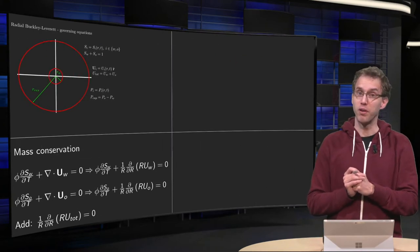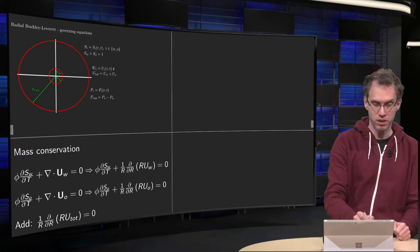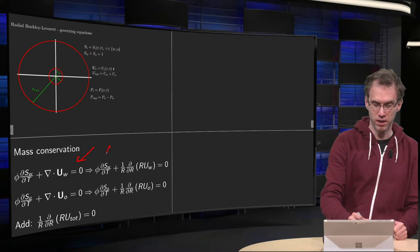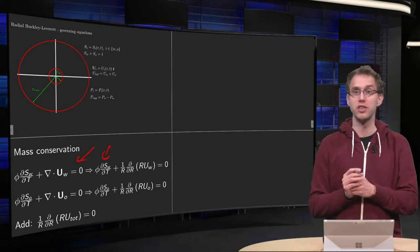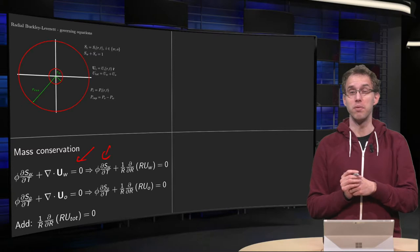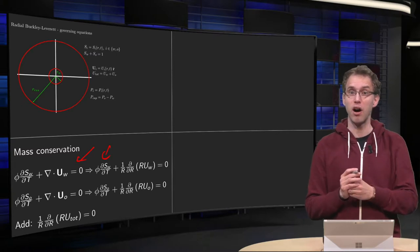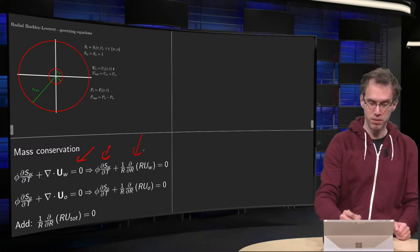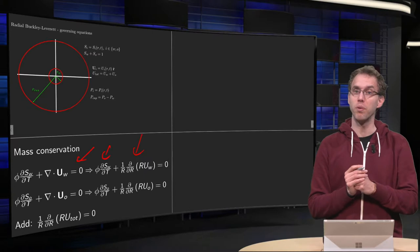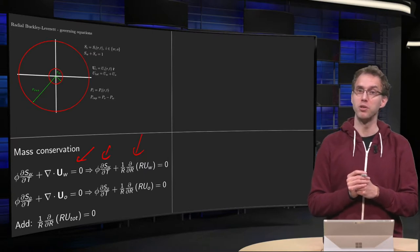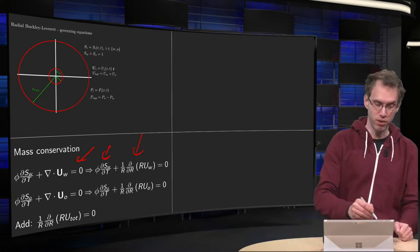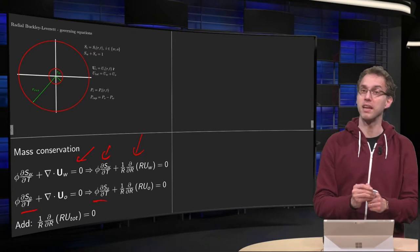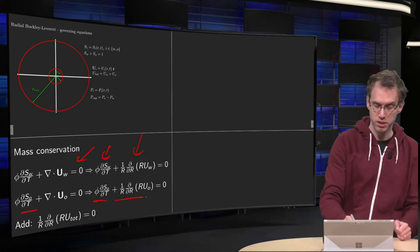First of all, we have mass conservation for water, that's the equation over here. The first term here remains the same, but the divergence operator simplifies a lot, because we only have r-dependence and only flow in the r-direction, so the divergence operator simplifies to only one term, 1 over r times d/dr of r times uw. Same for oil mass conservation, this term over here remains the same, and again the divergence operator simplifies a lot.